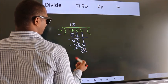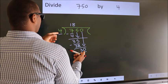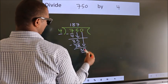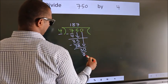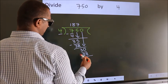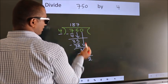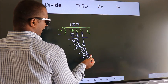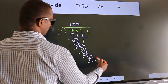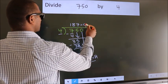So 30. A number close to 30 in the 4 times table is 4 sevens, 28. Now we subtract — we get 2. No more numbers to bring down, so we stop here. This is our remainder, and this is our quotient.